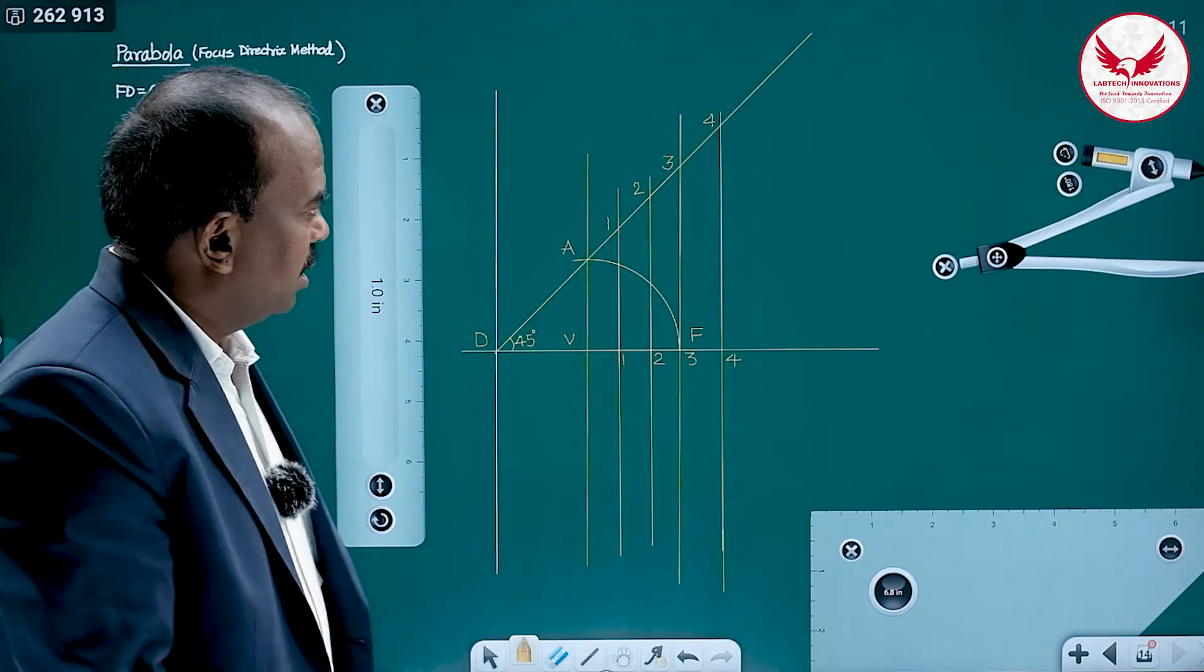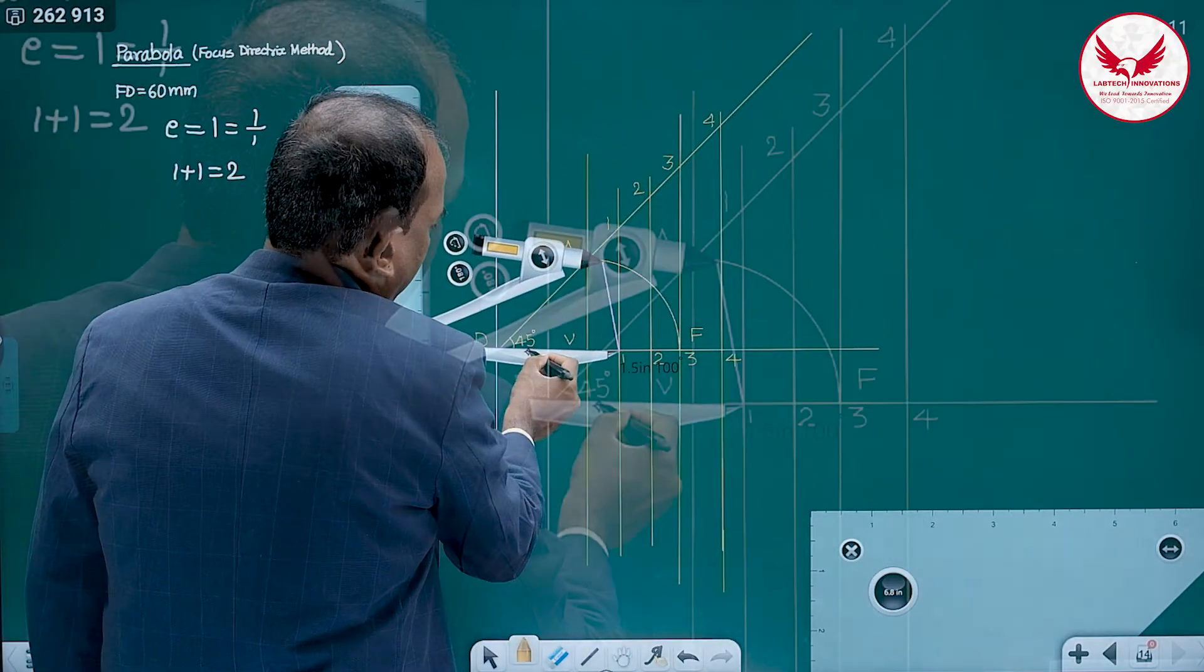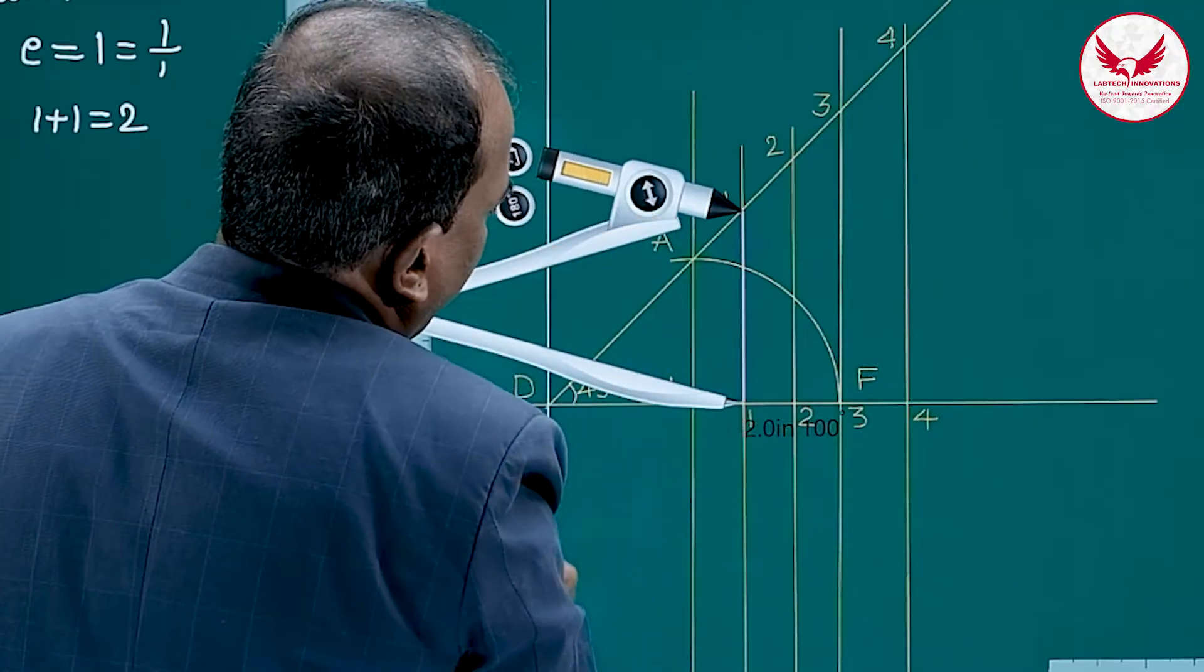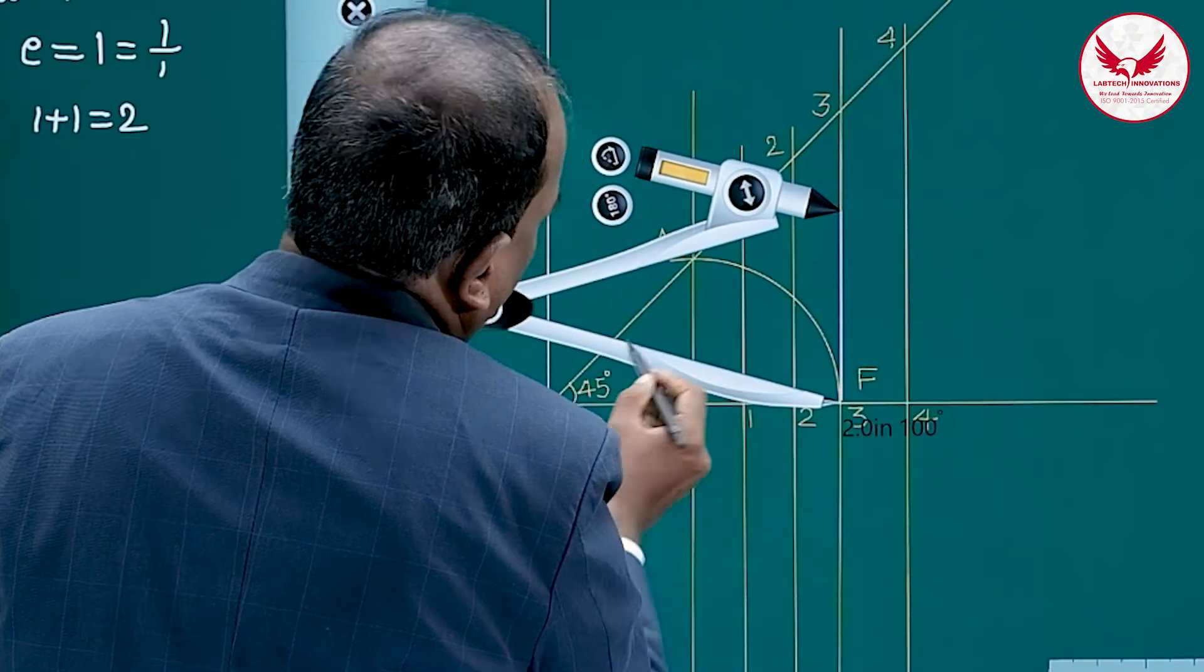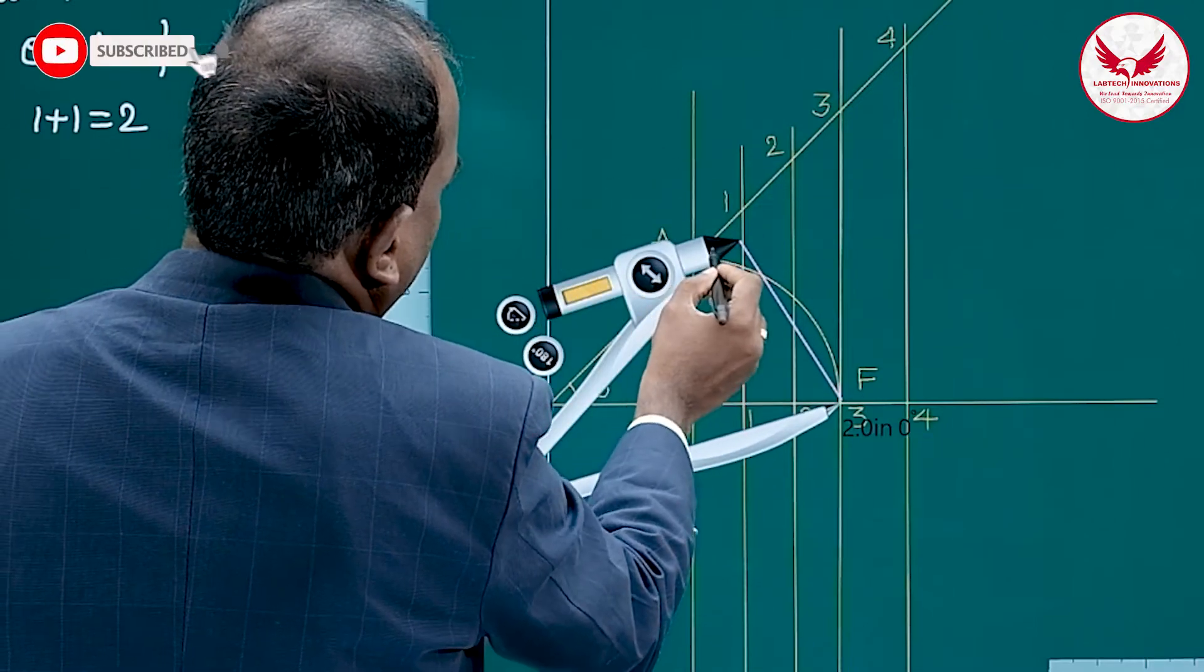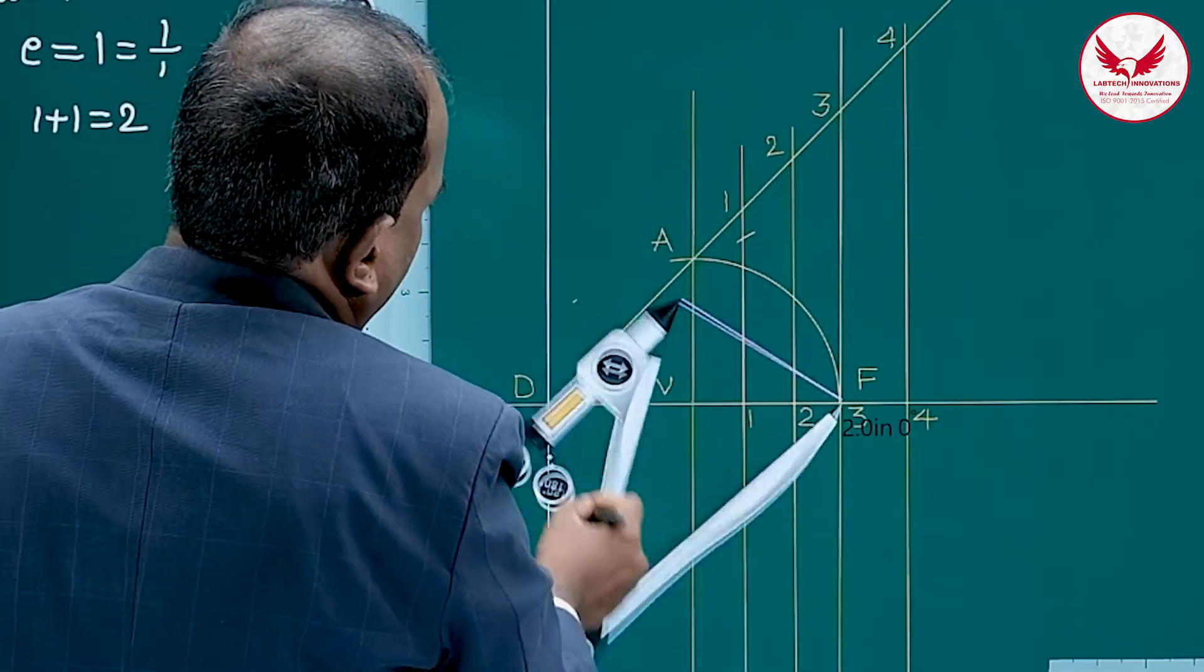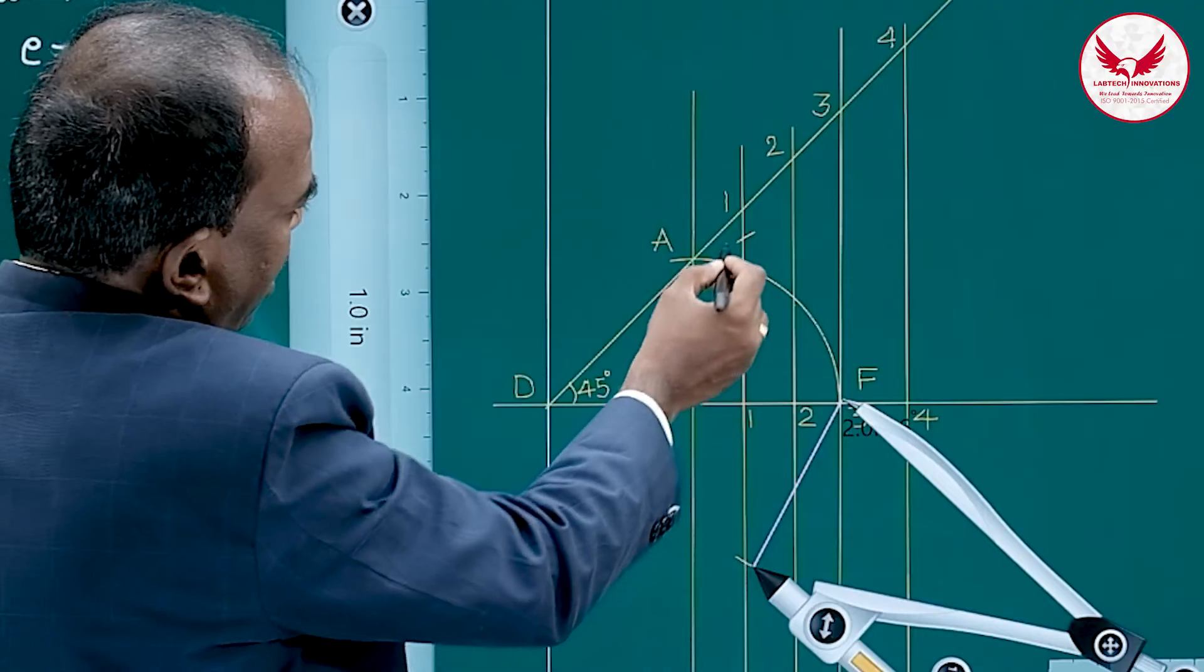How to get the required points? For that, now put the compass at 1 and then in the compass, take 1 to 1 distance. Focus point is very important for us, remember, put the compass at the focus.